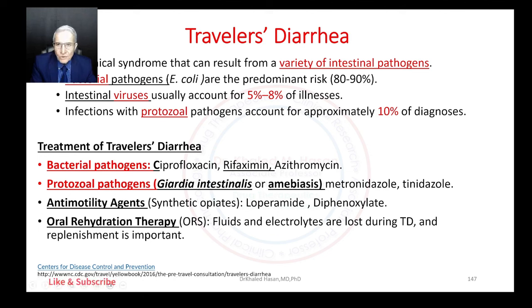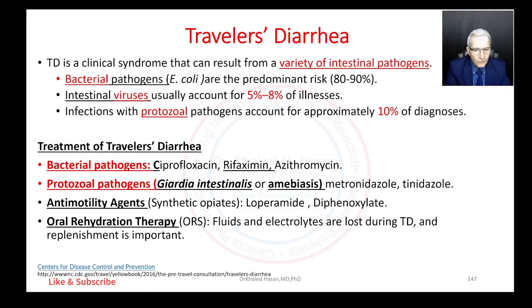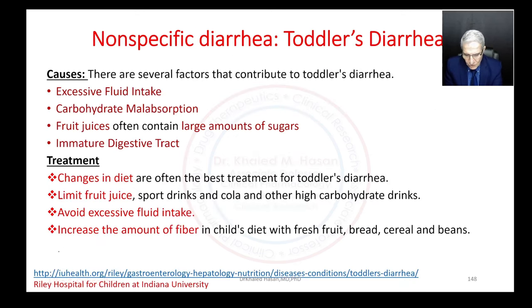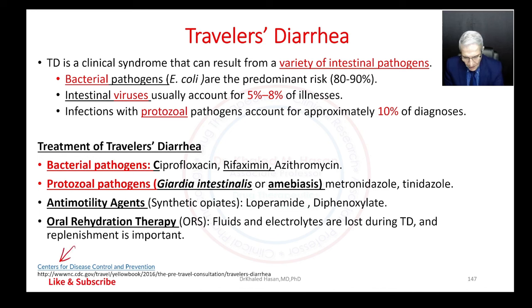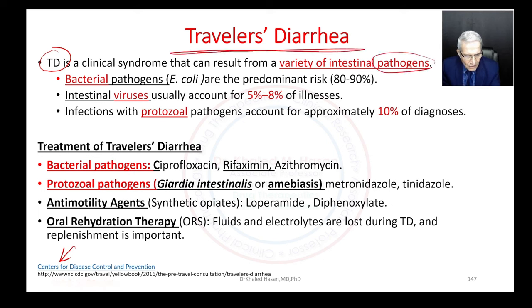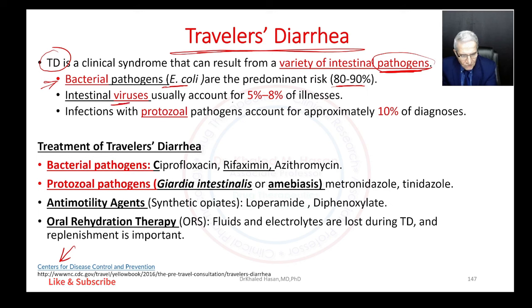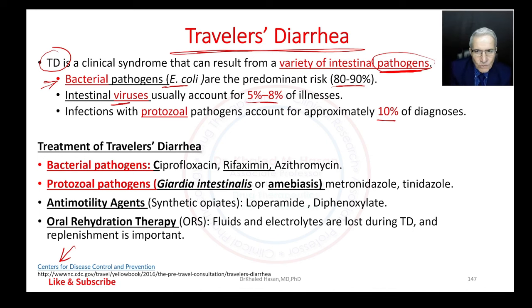Now, traveler's diarrhea. According to the CDC — the Centers for Disease Control and Prevention — traveler's diarrhea is defined as a clinical syndrome resulting from a variety of intestinal pathogens. It could be bacterial, primarily E. coli, which represents 80 to 90 percent of cases. It could also be viral, accounting for five to eight percent, or protozoa at about ten percent. So the most common cause is bacterial E. coli.